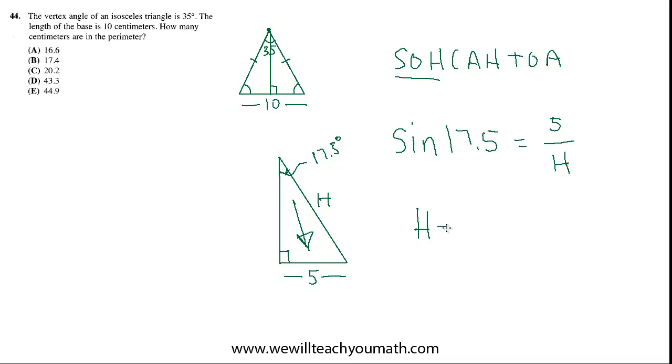So we get h equals 5 divided by sine of 17.5. And I put that into my calculator and I find out that h equals 16.628.